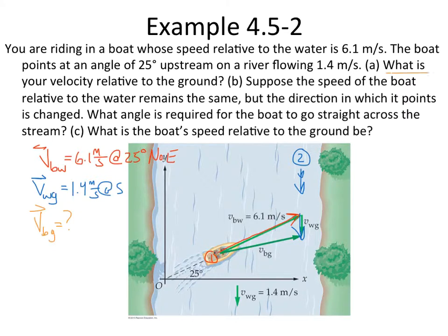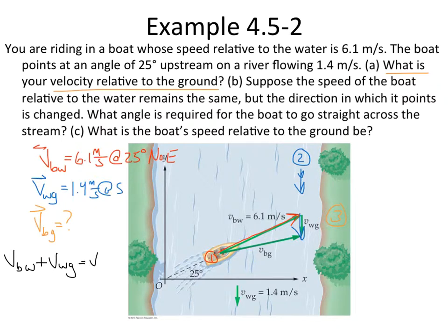That's what part A is asking. Does what we have match the 1-to-2 plus 2-to-3 format? Velocity of the boat to the water, plus velocity of the water to the ground, equals velocity of the boat with respect to the ground. Does that fit the 1-to-2 plus 2-to-3 equals 1-to-3 format? The answer is yes. All of our vectors are in the right format — we just need to add them up.